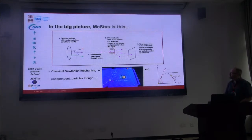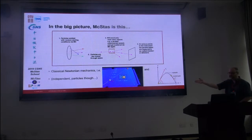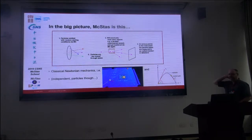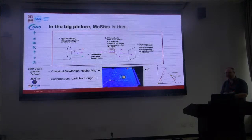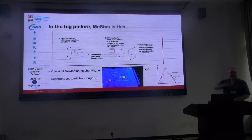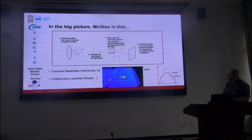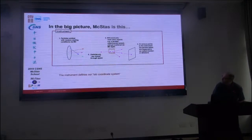As I mentioned earlier, the big picture of McStas is kind of a billiard — or, if you think back to your school physics, throwing a ball in a gravitational field. Trajectories in the gravitational field — that's really what it is.